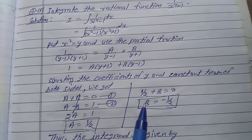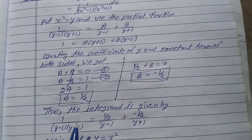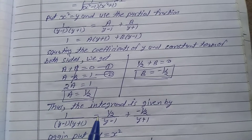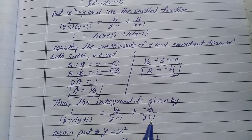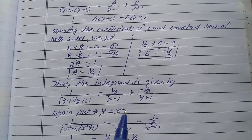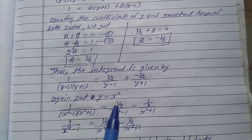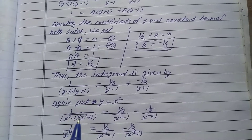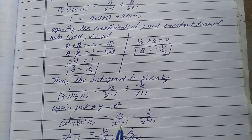Substituting A and B values, 1 upon bracket of y minus 1 into bracket of y plus 1 equals 1 by 2 upon y minus 1 minus 1 by 2 upon y plus 1. Since the original function is in x, put y equal to x square again, giving 1 upon bracket of x square minus 1 into bracket of x square plus 1 equals 1 by 2 upon x square minus 1 minus 1 by 2 upon x square plus 1.